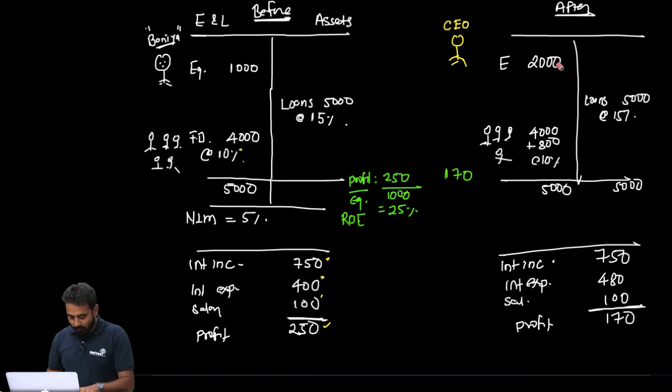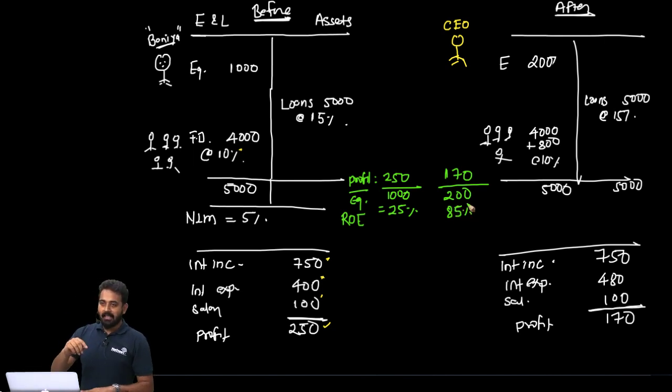So what is my profit now? My profit is 170. But in the revised structure, I wrote 2000 here, I should have written 200. In the revised structure, what is my equity? 200. So how much is that in percentage term? That is 85%. So you can look at the dramatic jump in ROE just by adjusting the equity on the books.